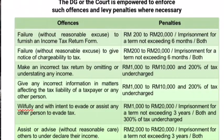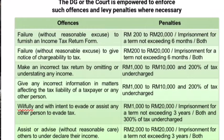Next is the offense of making an incorrect tax return by omitting or understating any income — they have to pay penalties of RM1,000 to RM10,000 and 200% of the tax undercharged. The same penalties apply if they give any incorrect information in matters affecting the taxability of a taxpayer or any other person. Next is the offense of willfully with intent to evade or assist any other person to evade tax — they have to pay RM1,000 to RM20,000 or imprisonment for a term not exceeding 3 years, or both, and 300% of tax undercharged.